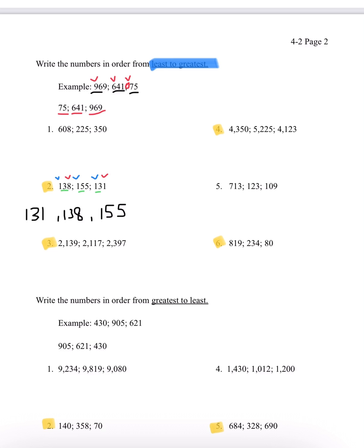Number 3, we have 2,139, 2,117, and 2,397. Each has a 2 in the thousands place, so we look at the 100s. We have a 1, a 1, and a 3. Since 3 is greater than both 1s, 2,397 is the greatest. For the two numbers with 1 in the 100s, we look further and have a 3 and a 1. Since 3 is greater than 1, 2,117 is the least. The order is 2,117, 2,139, and 2,397.